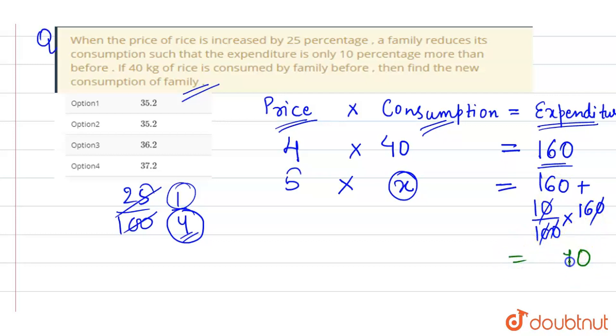How much is it? 160 plus 16 equals 176. So 176 is finally the expenditure.